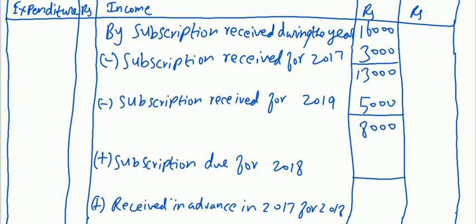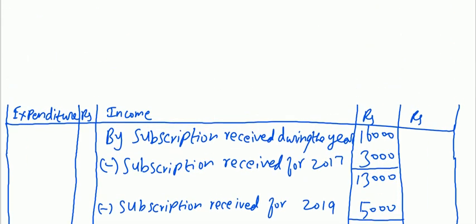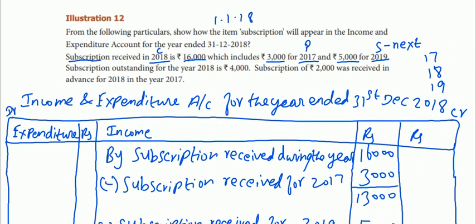So 13,000 minus 5,000 is 8,000. Now, subscription outstanding for the year 2018 is Rs.4,000. This is outstanding for the current year 2018, meaning it is still pending or due.